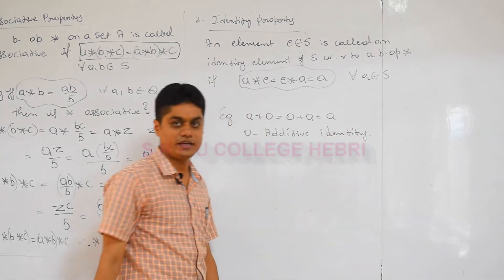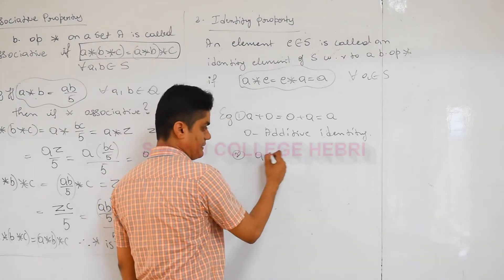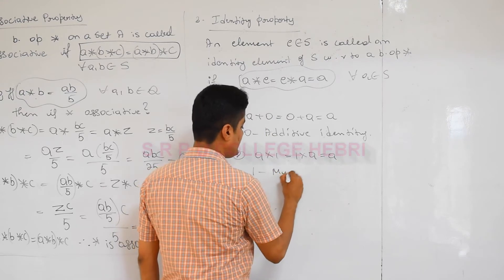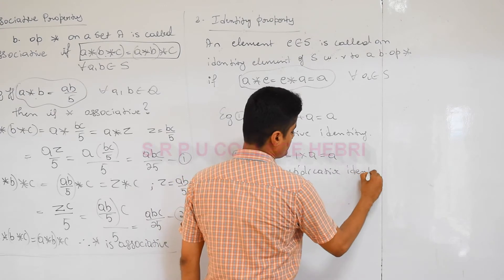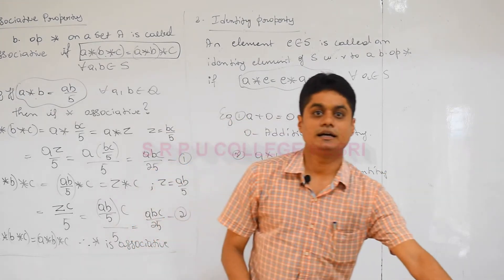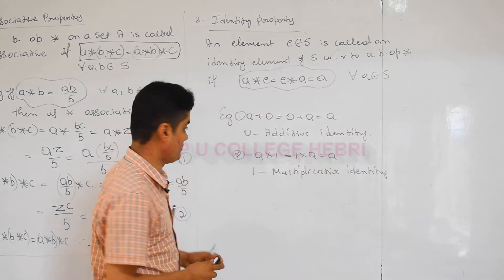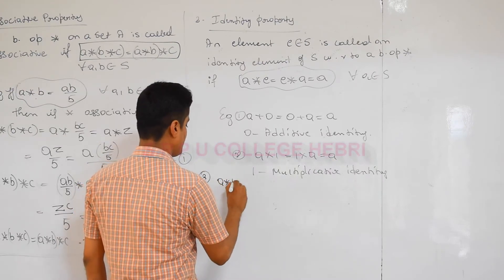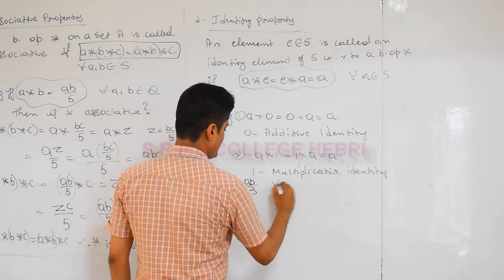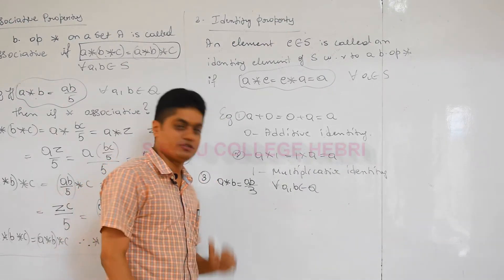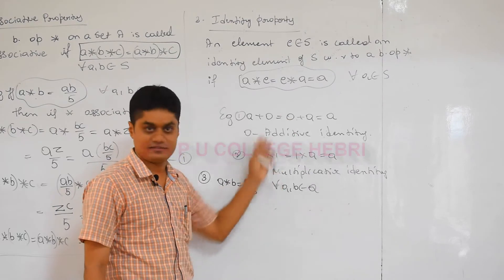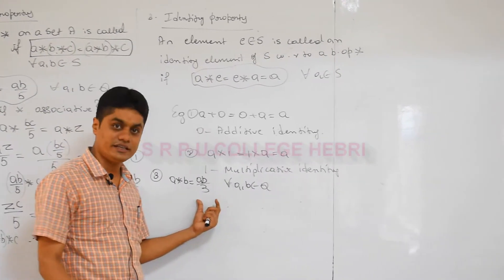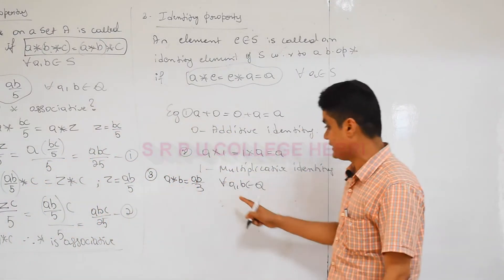What is multiplicative identity? Which number should you multiply with A so that the result is A itself? The answer is 1, since 1 times A equals A. So 1 is called the multiplicative identity. This is basic knowledge you already know. Now let me take one example to show how to find the identity element for a non-standard operation.